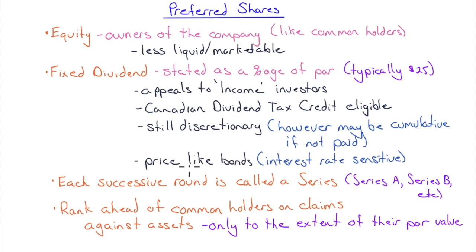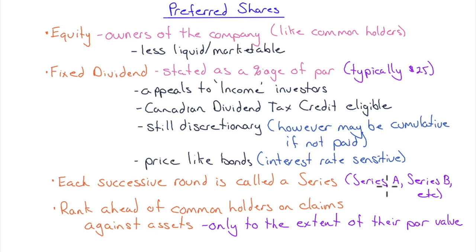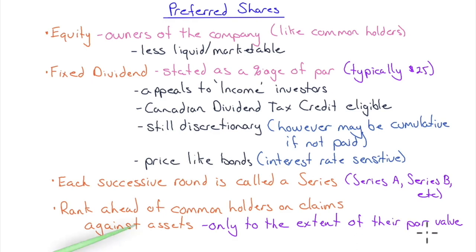Preferred shares price like bonds — they don't move with the value of the company but with interest rates. Each successive round of a preferred share issue is called a series (e.g., Series A, Series B), distinguished only by when they were issued. In bankruptcy or liquidation, all preferred shareholders rank as one class — Series A doesn't get paid before Series B. They rank ahead of common shareholders, but only to the extent of their par value (typically $25).